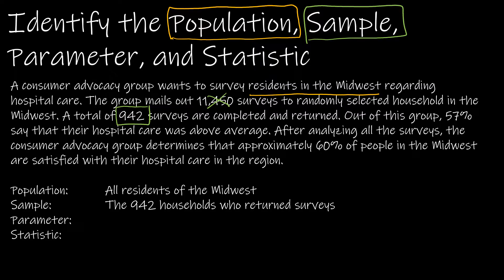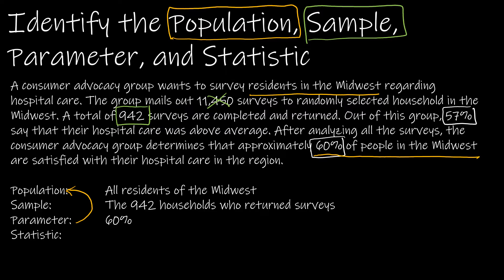Remember, population goes with parameter. We have 57% saying their hospital care was above average, and 60% of people in the Midwest. The population is all residents of the Midwest, and the figure that refers to all people in the Midwest is 60% — so 60% is our parameter. The sample is the group of 942 respondents, and 57% of those is our statistic.